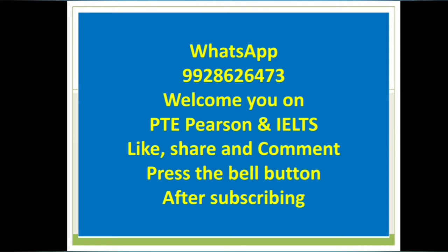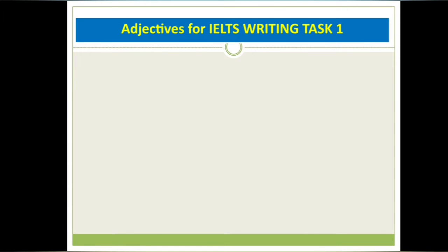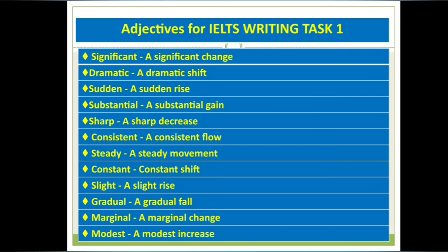Welcome to PTE Pearson and IELTS. Today in this video we are going to discuss some adjectives which we are using for IELTS Task 1. Here is the list of adjectives for IELTS writing Task 1. These words are used to show some kind of changes happening in Task 1 — no matter what the task is: pie chart, flow chart, process, line graph, or table chart.